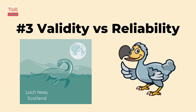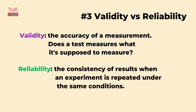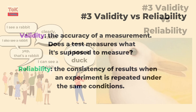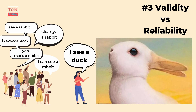Evaluation point number three: validity versus reliability. Validity refers to the accuracy of a measurement — essentially whether a test measures what it's supposed to measure. Reliability, on the other hand, refers to the consistency of results when an experiment is repeated under the same conditions. A study can be reliable without being valid if it consistently produces the same results that don't accurately reflect the phenomenon being studied. Conversely, a valid study that isn't reliable may provide accurate results only sporadically. The scientific method strives for both, but achieving the balance is complex and demanding.